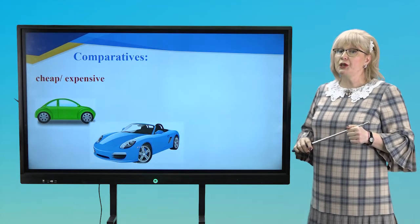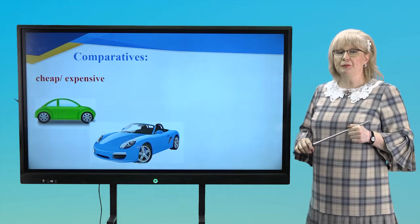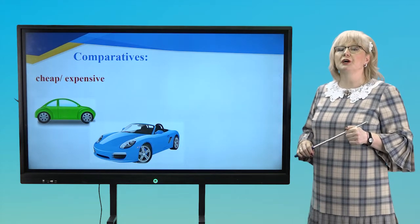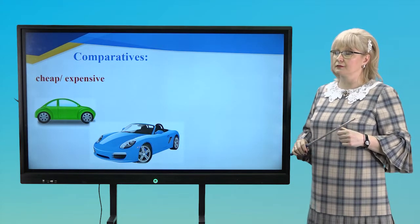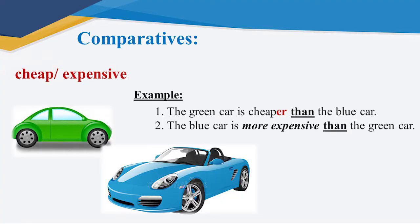Next example. Here you can see two cars and two adjectives. Cheap, expensive. Try to compare these cars. So, ready? Ok, let's check. The green car is cheaper than the blue car. The blue car is more expensive than the green car. Well done! Let's continue.